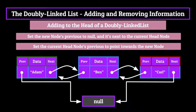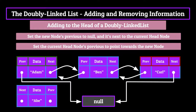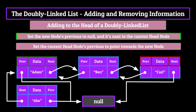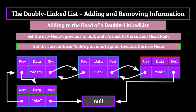So if we wanted a new node with the string "abe" to be the head of our linked list, we would follow these steps. First, we'd set the abe node's next to point towards the atom node, and its previous to point towards a null value. Then by setting the atom node's previous to point towards the abe node, we have successfully added that node to the head of the list and given it the title of head node.